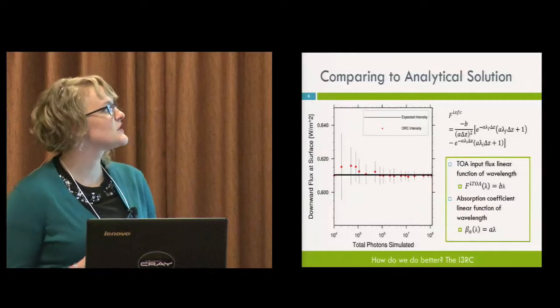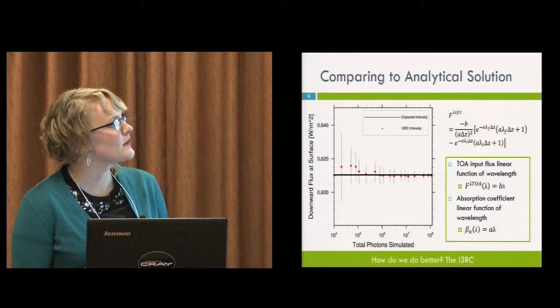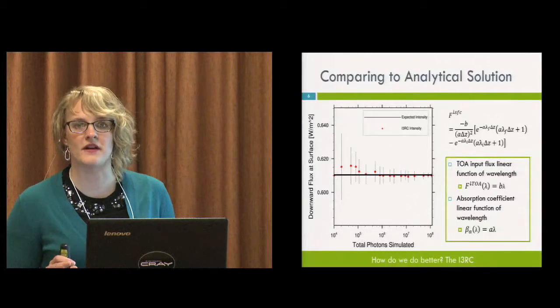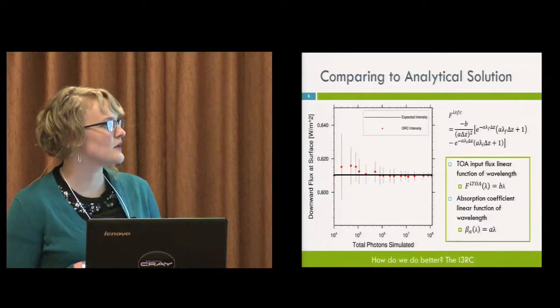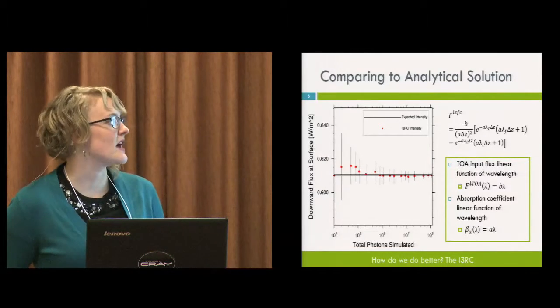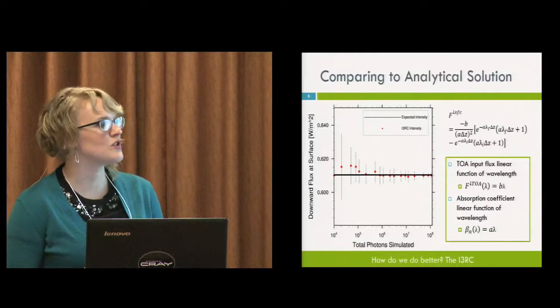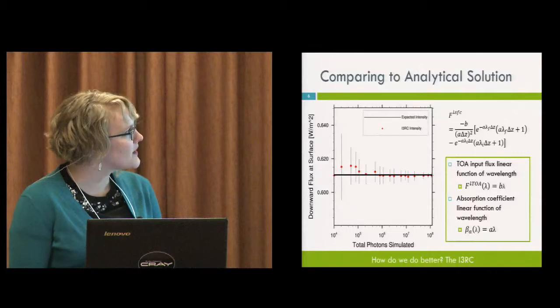Okay, so I wanted to make sure this was working as I expected. So I designed an analytical case with very simply varying properties. So the solar source function varied linearly with wavelength, as did the absorptive properties of the atmosphere. And I could come up with a solution that I could compare the model results to.